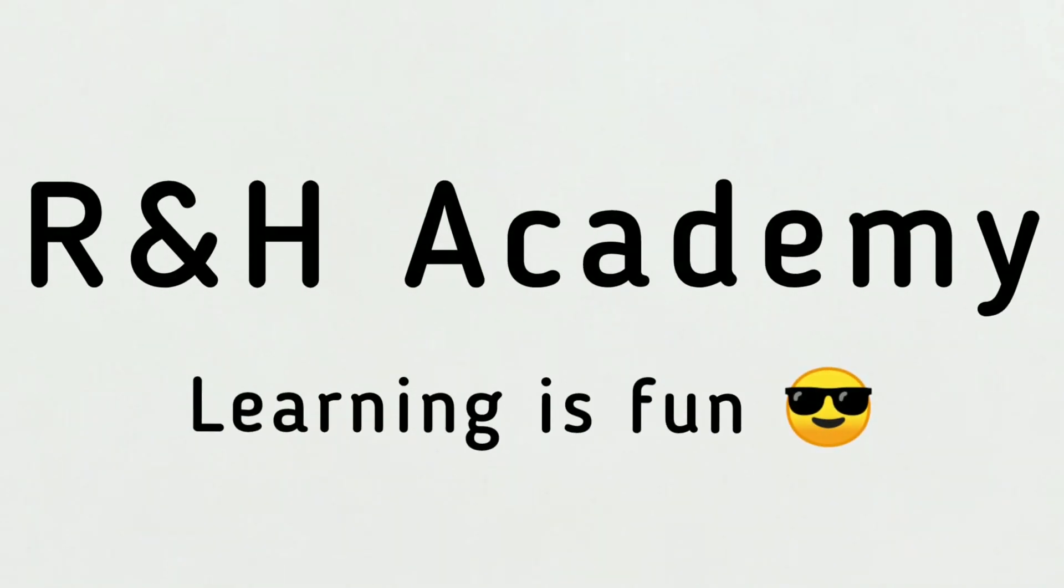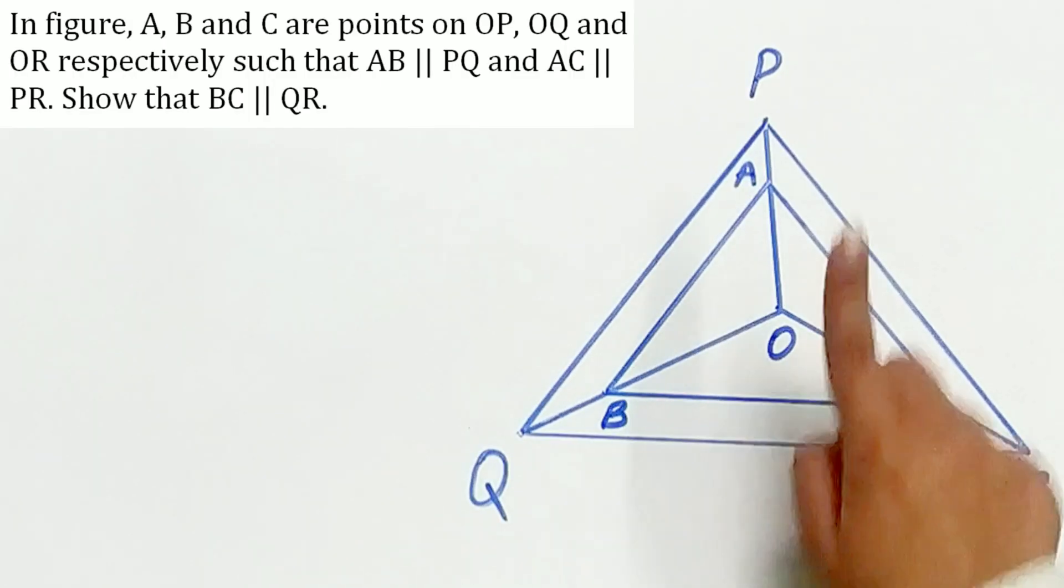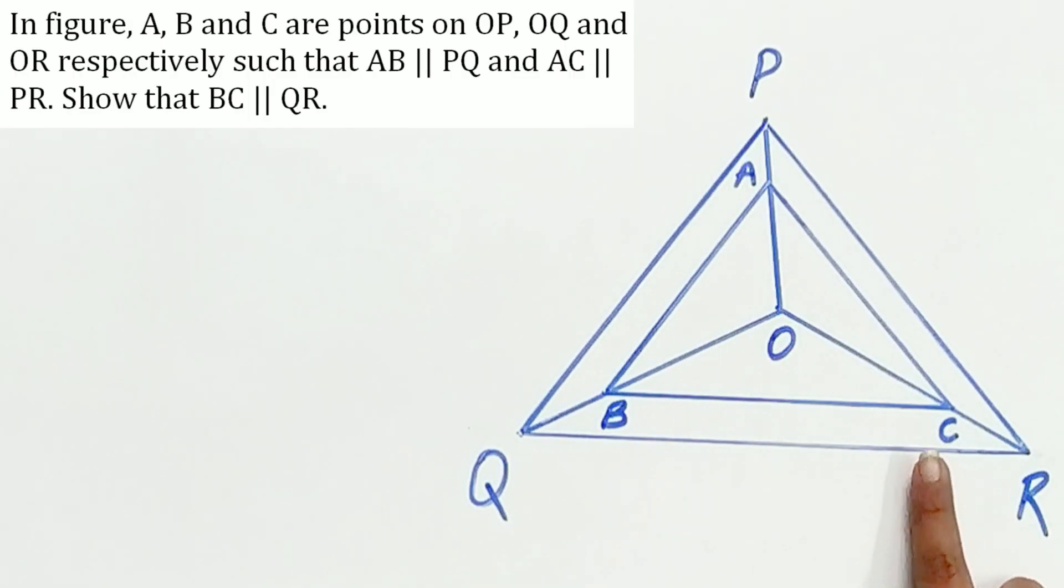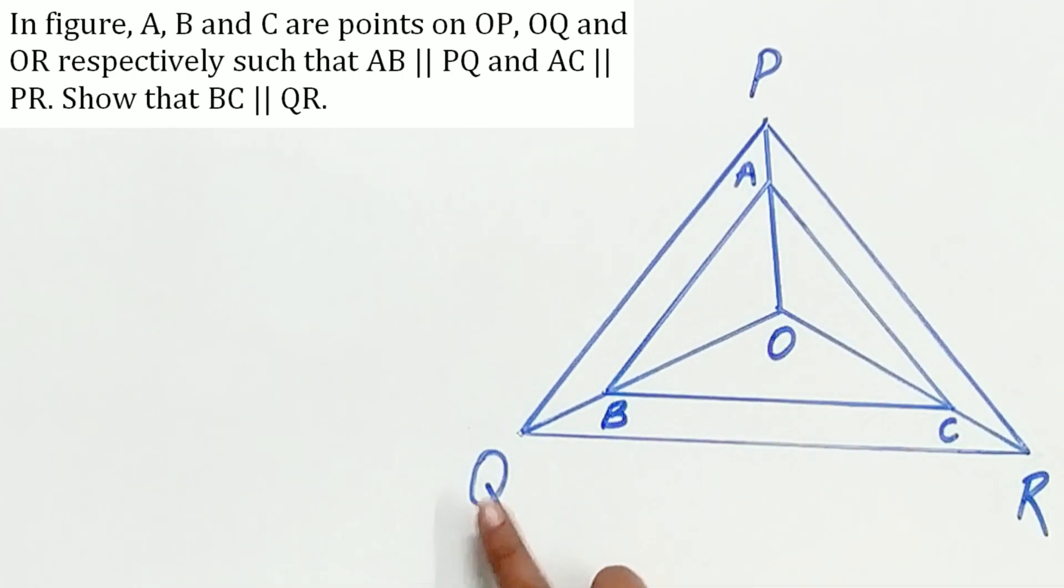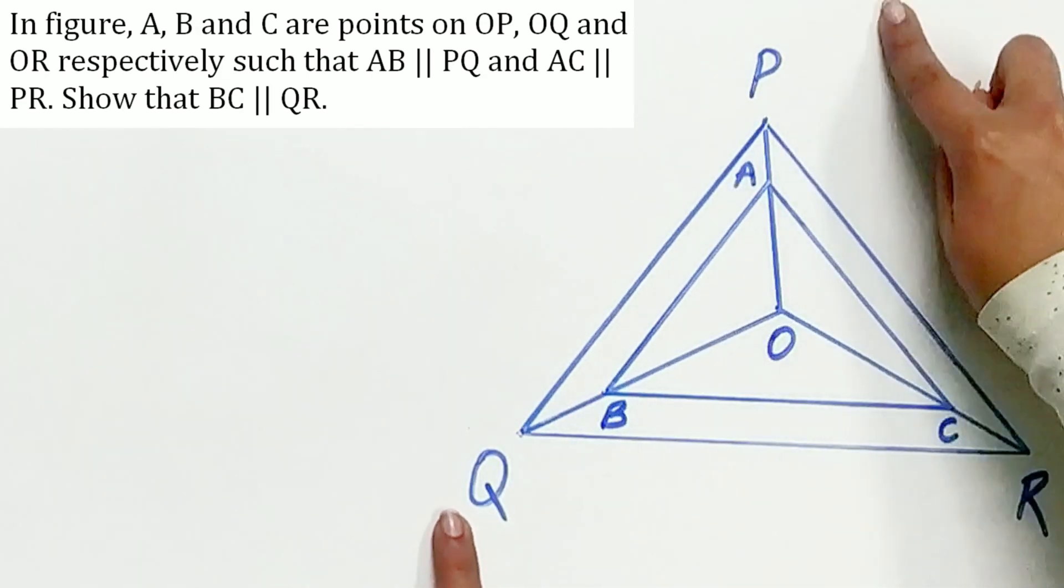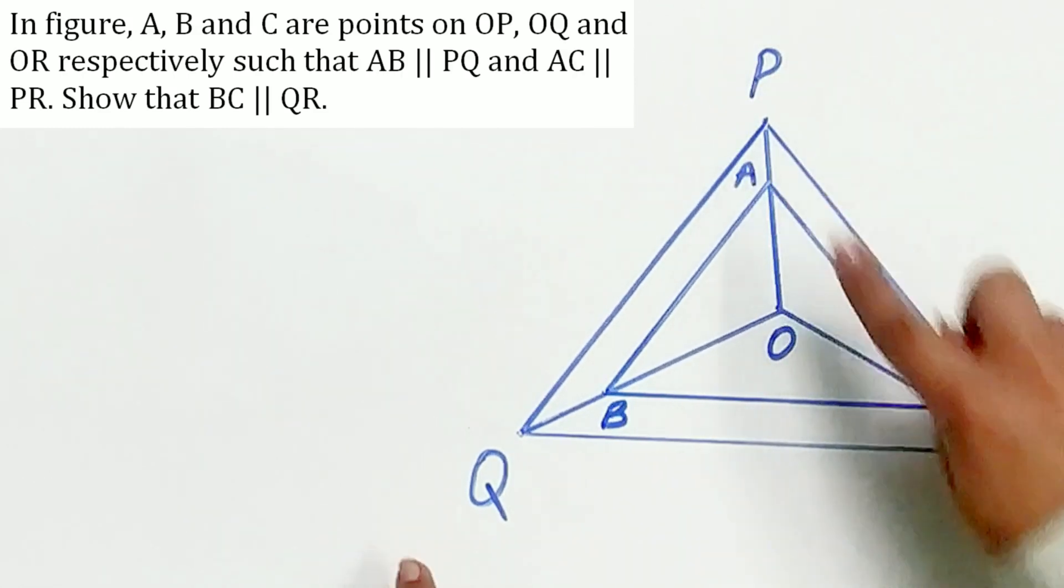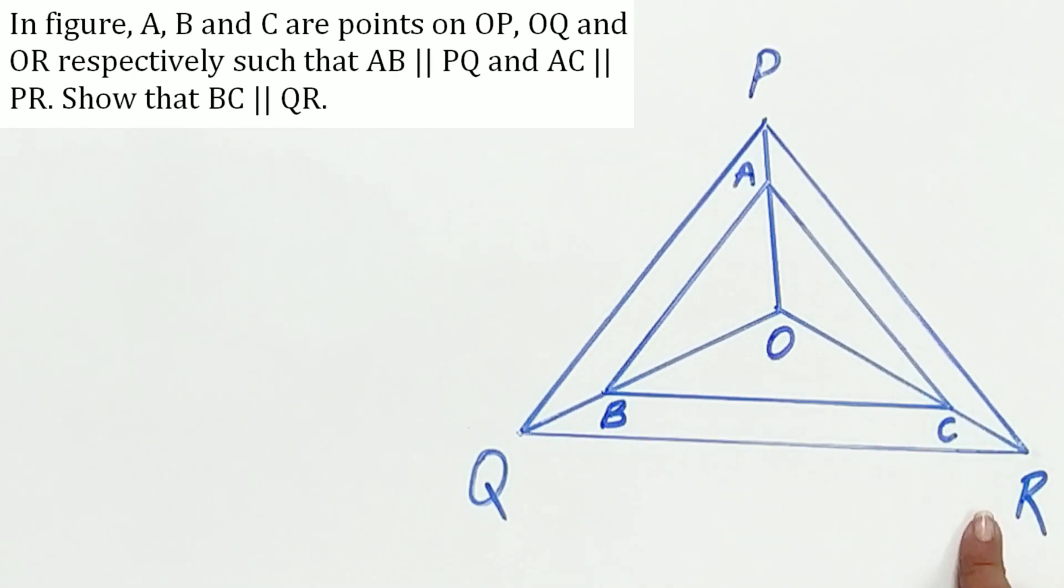Welcome to R&H Academy channel. Question 6 of exercise 6.2 says: in the figure, A, B, C are points on OP, OQ, and OR respectively, such that AB is parallel to BQ, AC is parallel to PR. We have to prove that BC is parallel to QR.